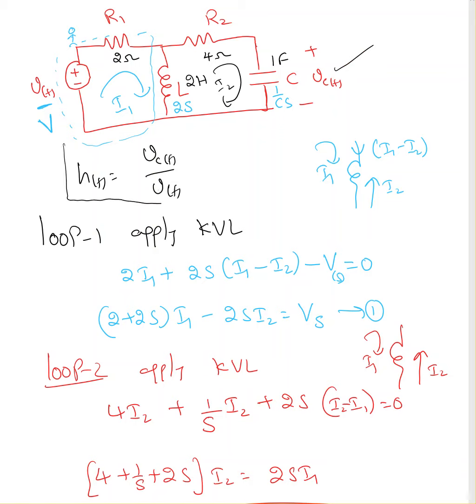So, in time domain, H of t equals Vc of t over V of t, which is output voltage over input voltage. This is nothing but the voltage gain.